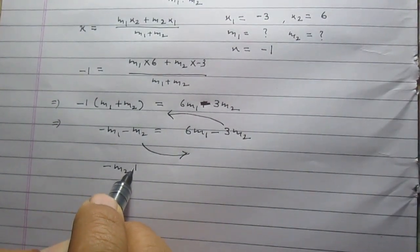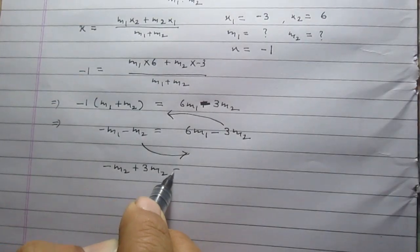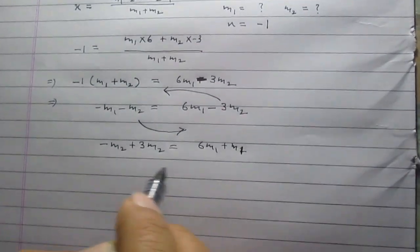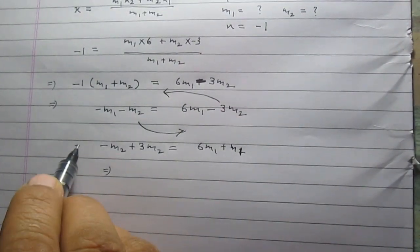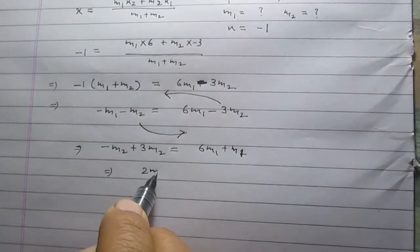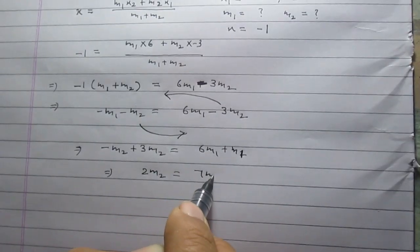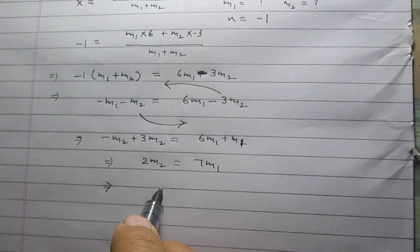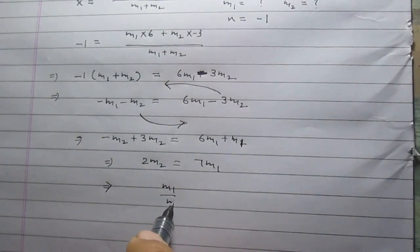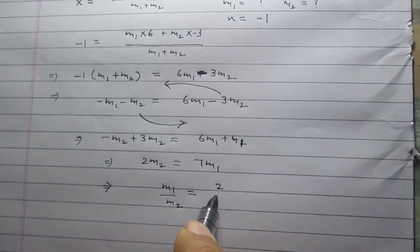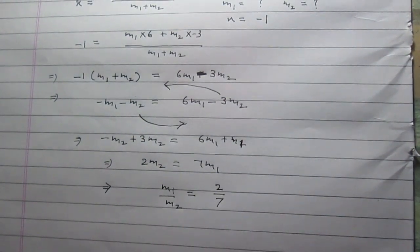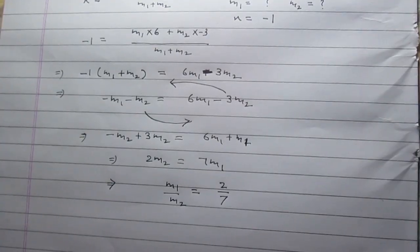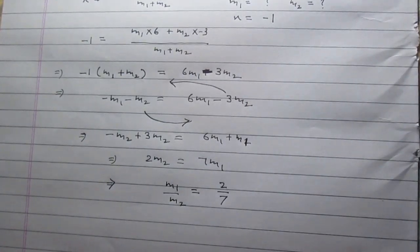−m₂ + 3m₂ = 6m₁ + m₁, so 2m₂ = 7m₁. In this way, we can find that m₁/m₂ = 2/7. Therefore, the ratio in which point P divides line segment AB is 2:7.